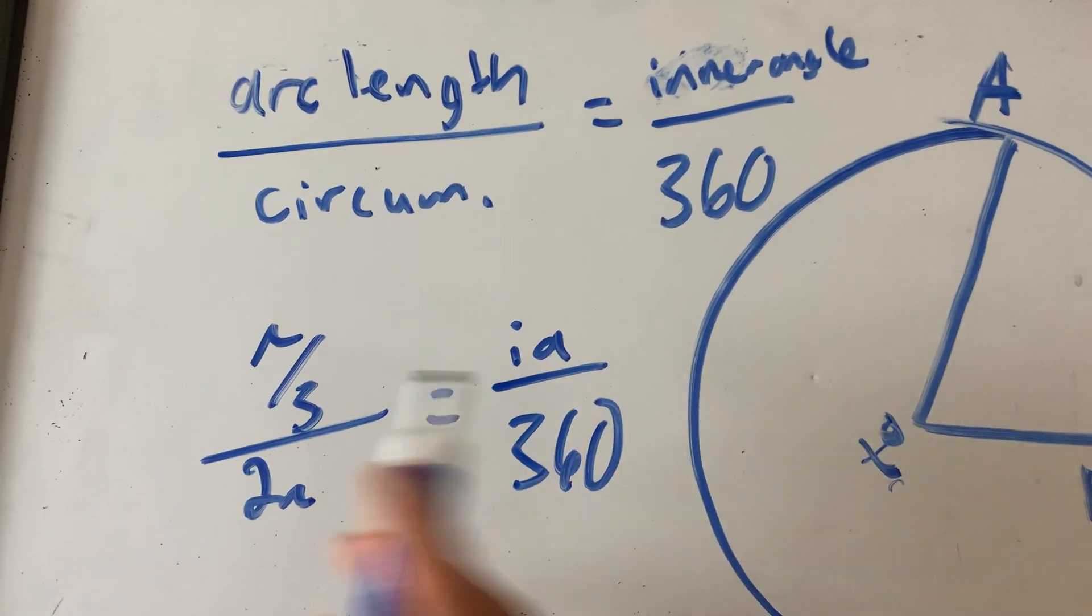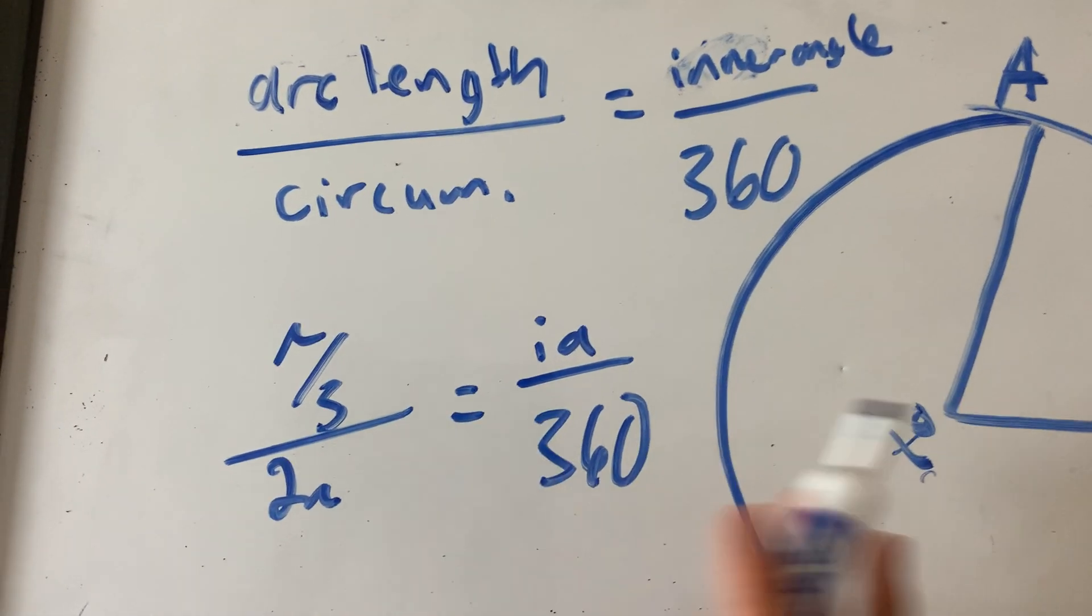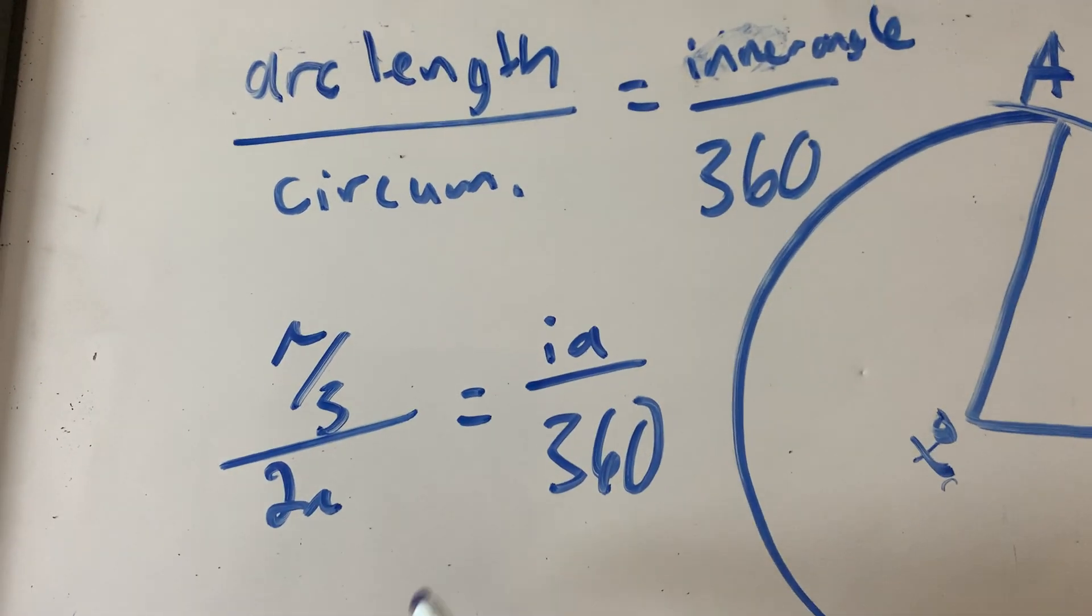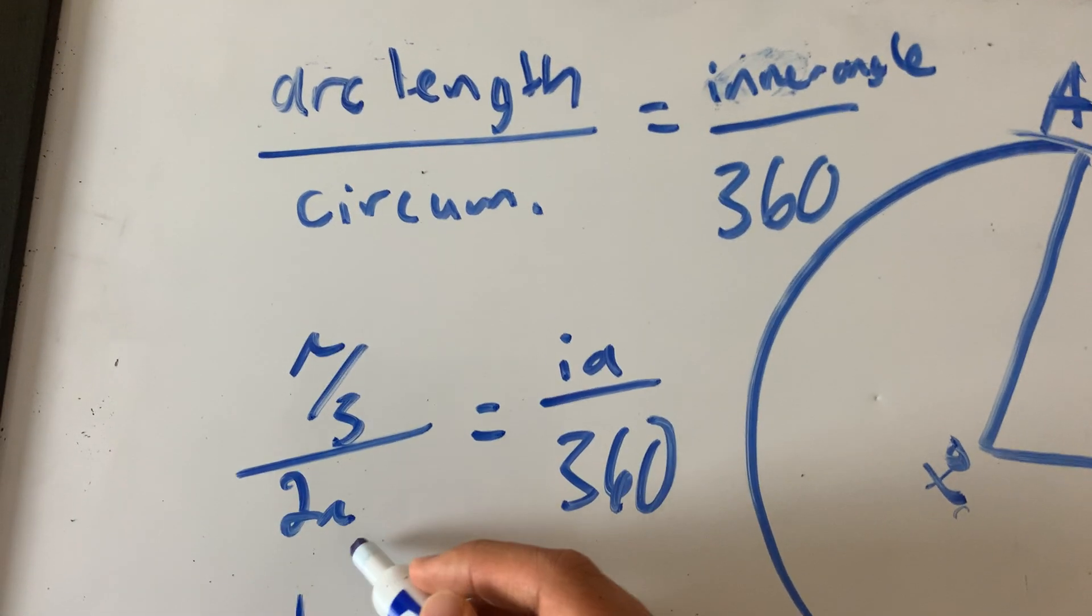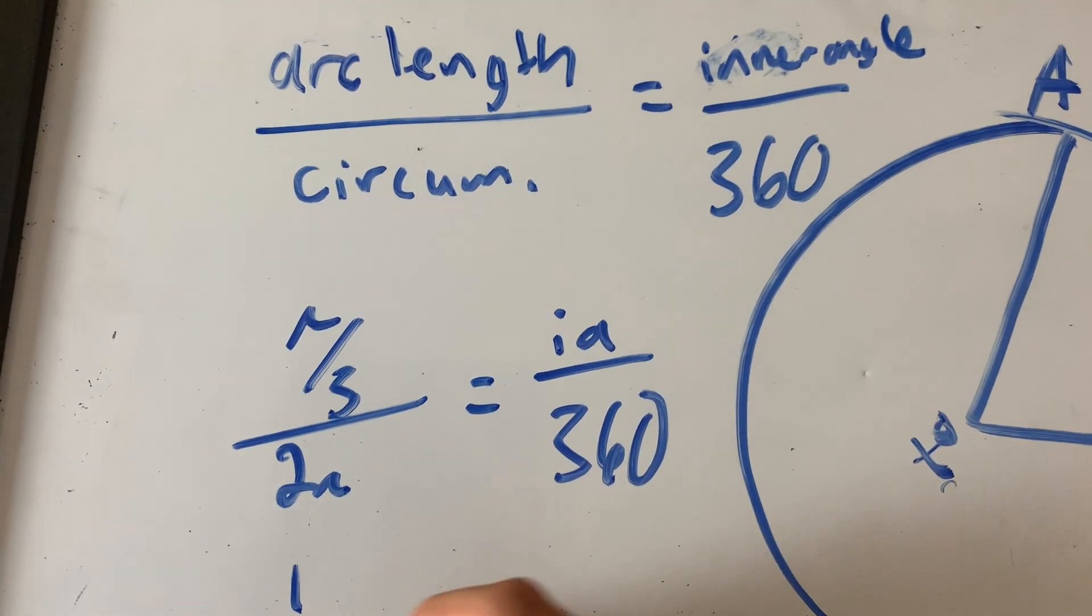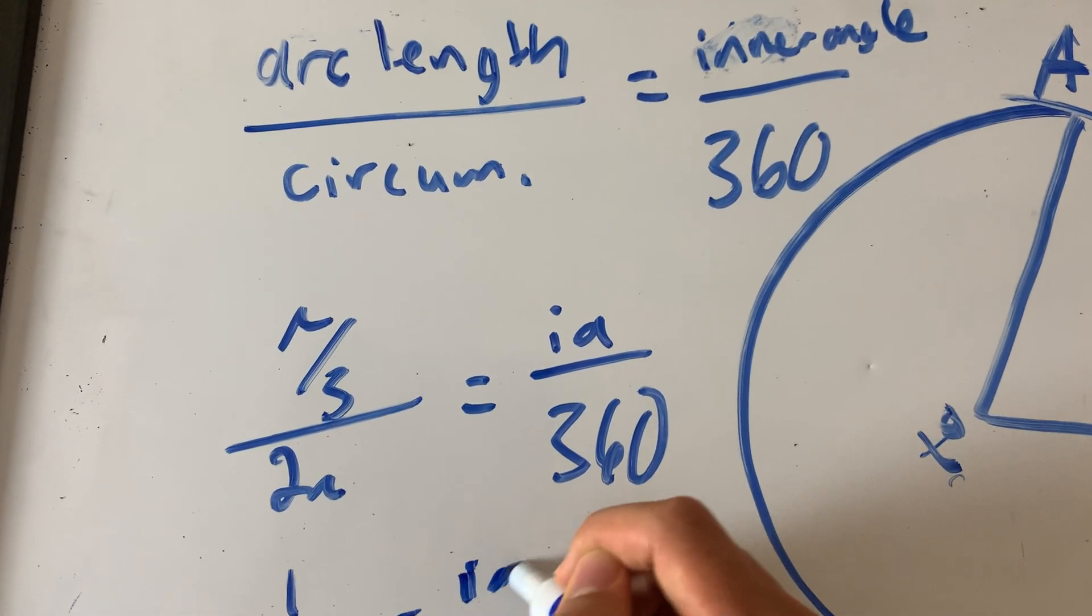Simplify the left side. Don't do that cross and multiply stuff. I know you guys love that. Don't do that. No, no. Simplify the left side first, okay? So you get one over six. Six, yeah, one over six is equal to IA over 360.